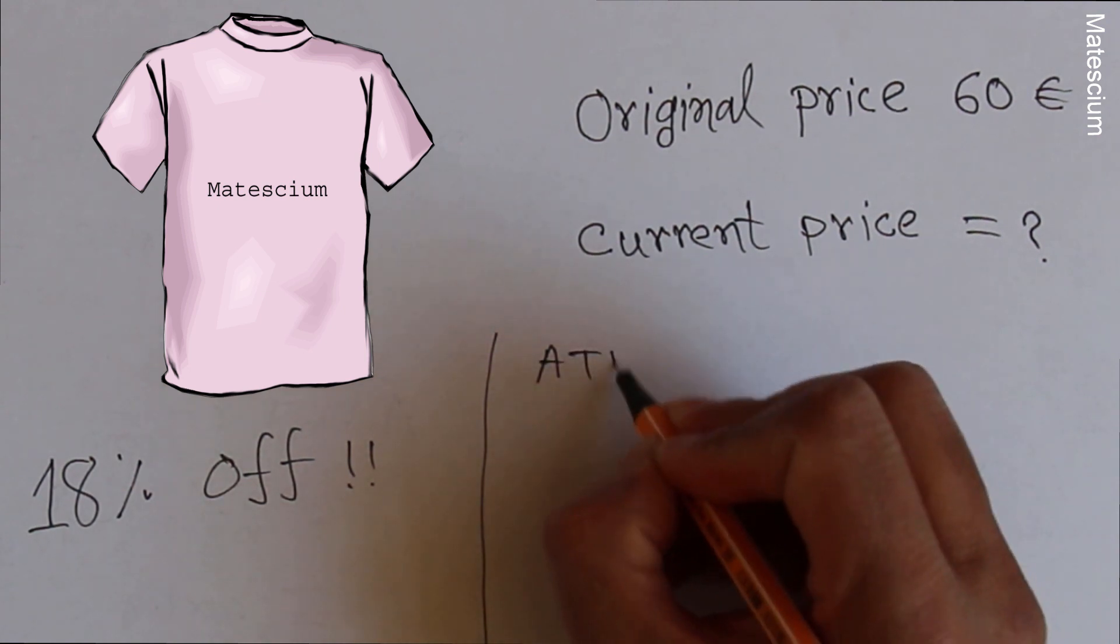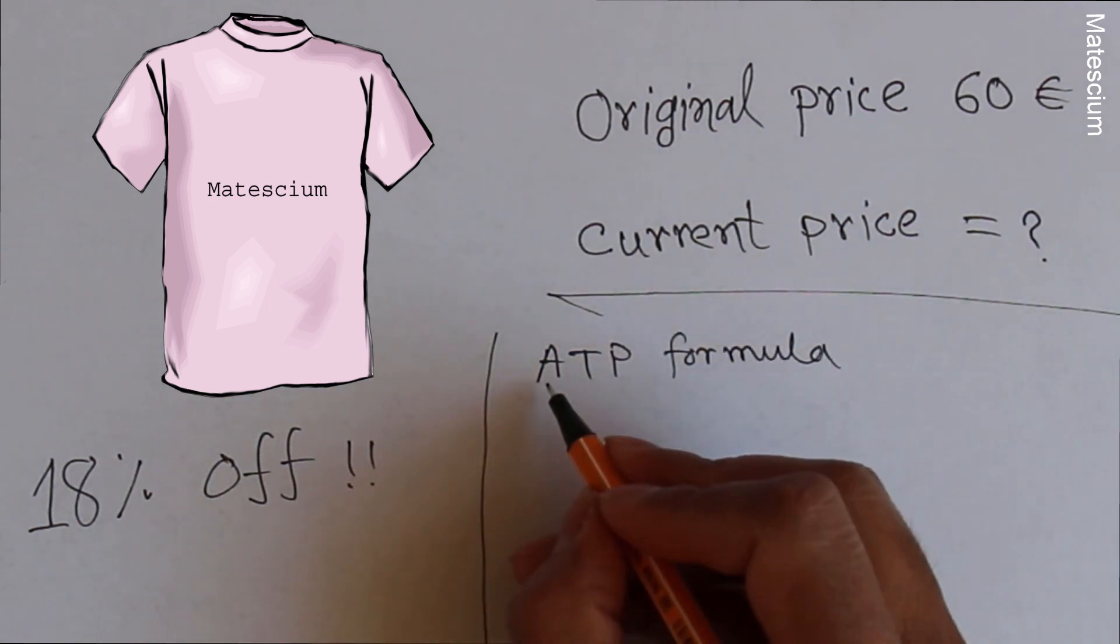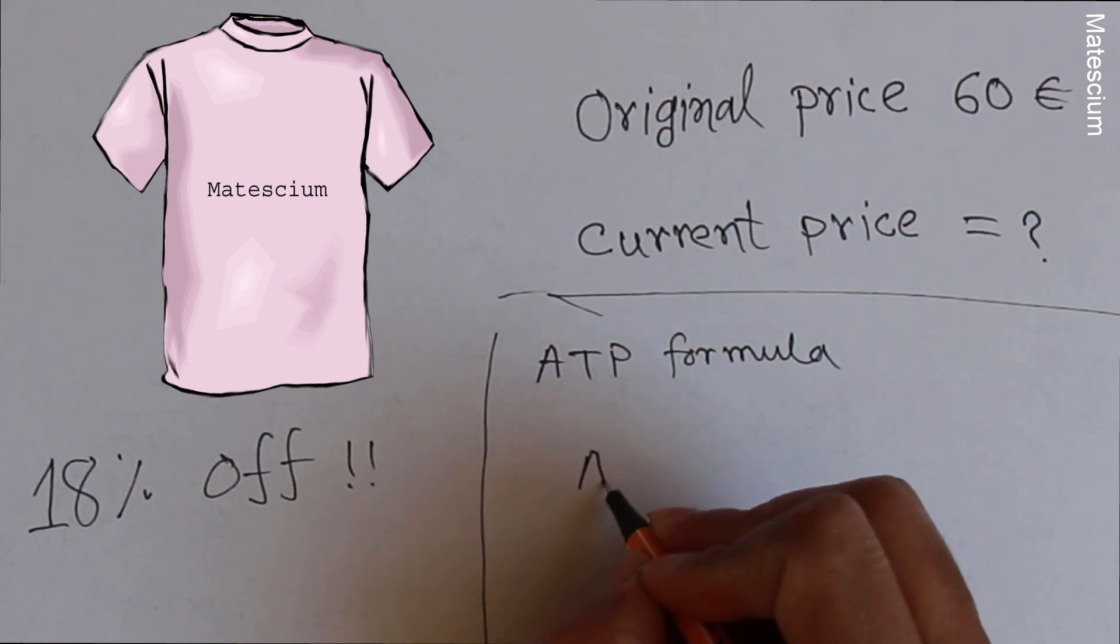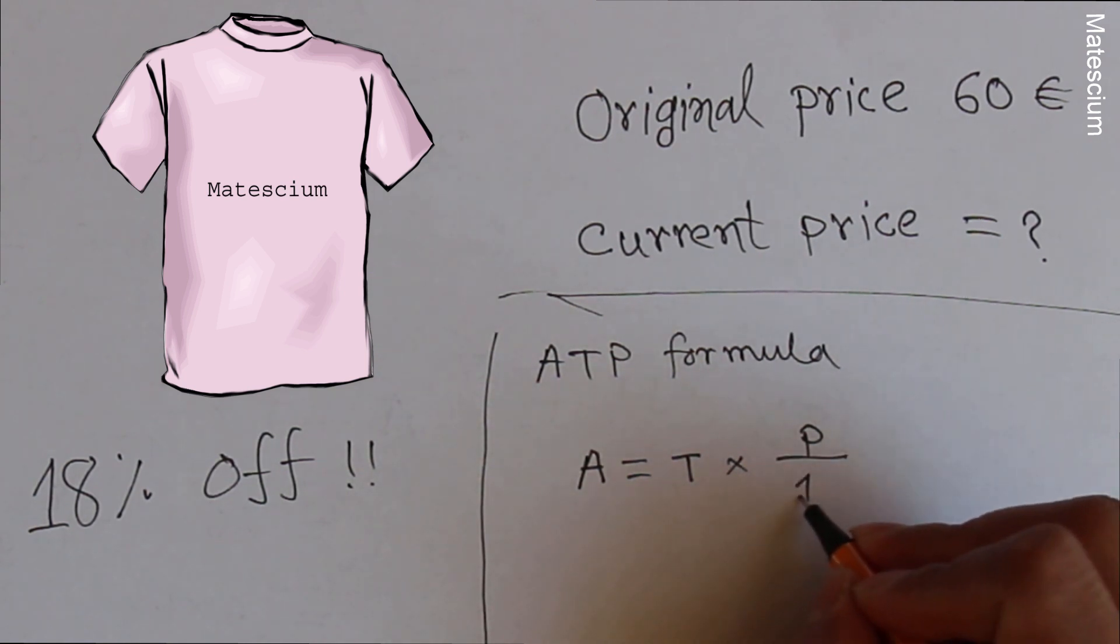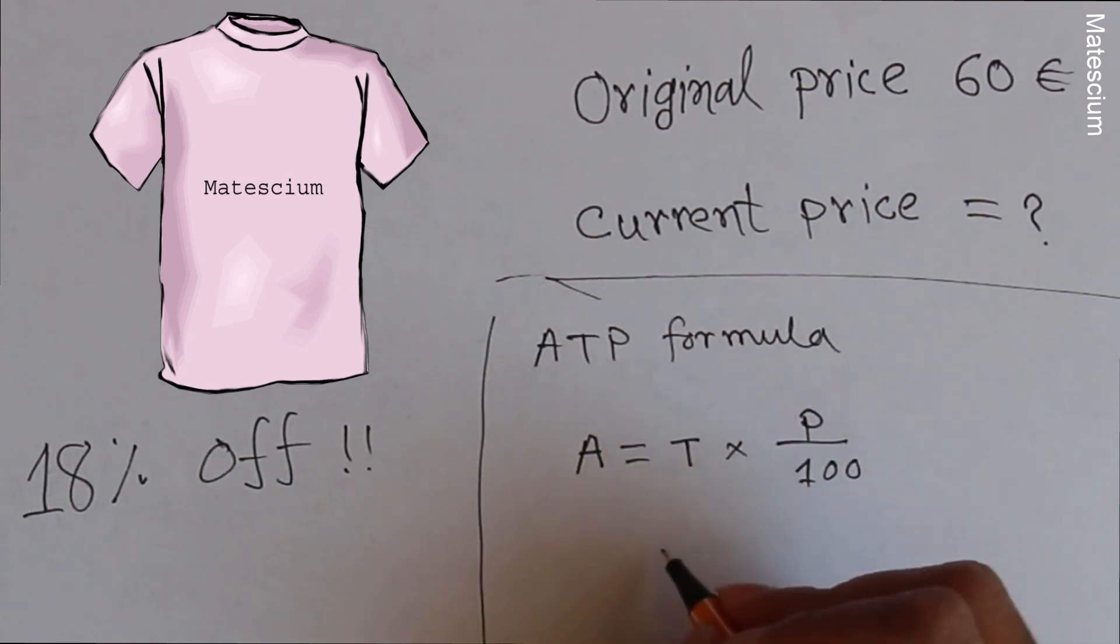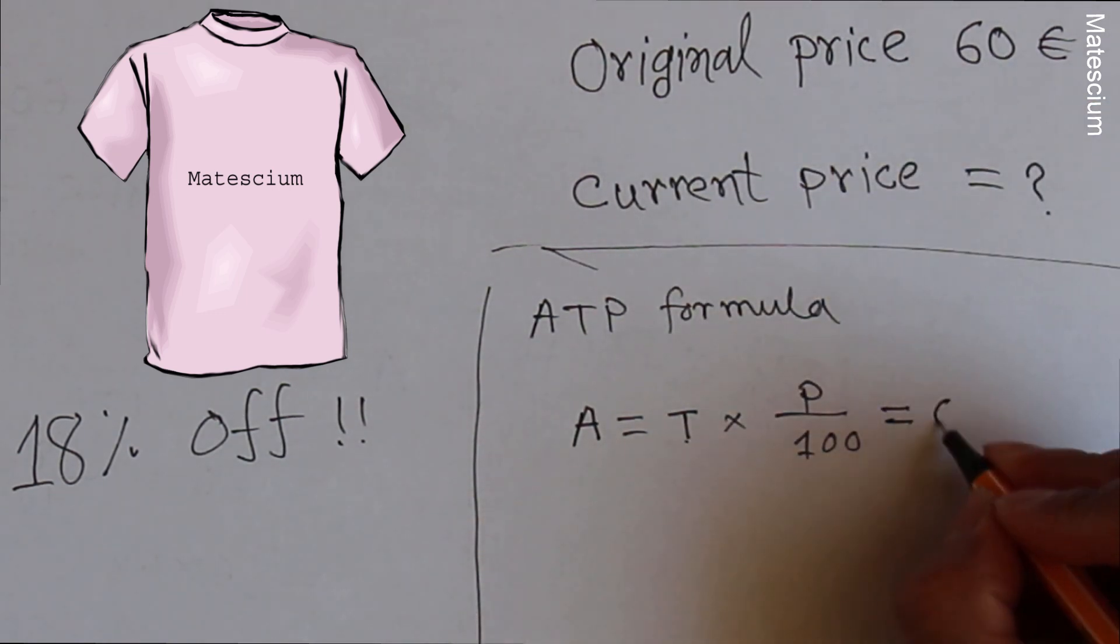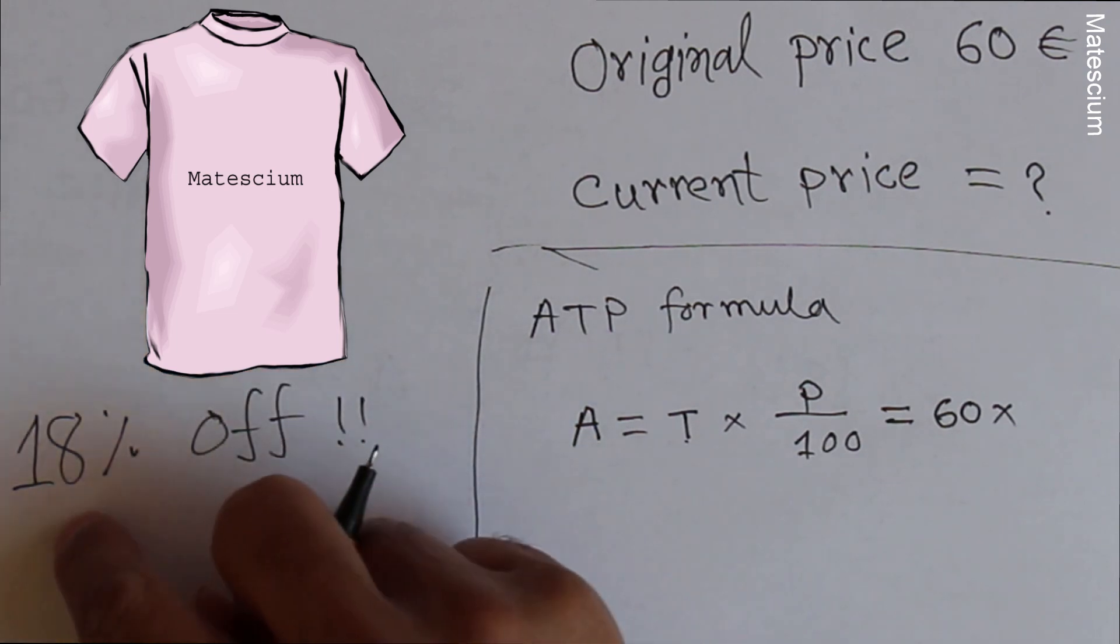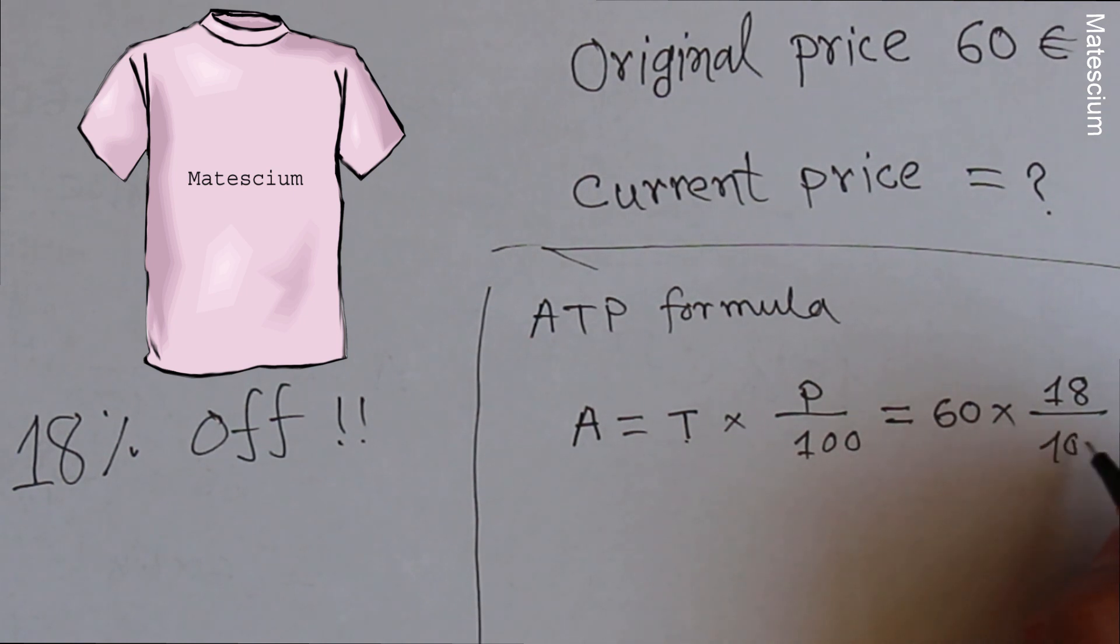We can apply the same ATP formula, where A is the asking value or asking price that we have to find out. T is the total price and P is percentage over 100. So if we place this value here, T means 60 euros. That is total price. P means percentage that is reduced percentage, which is 18 over 100.